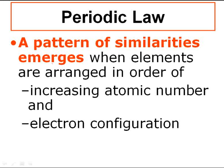The name for that is called periodic law — that's when a pattern of similarities emerges based upon the arrangement of the periodic table. Periodic tables are arranged based upon the atomic number going left and right, and vertically by elements having the same valence electron configuration.